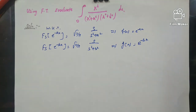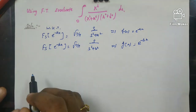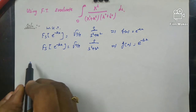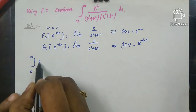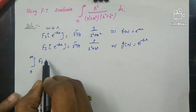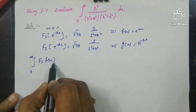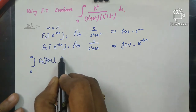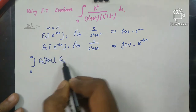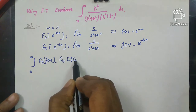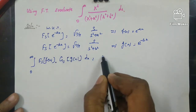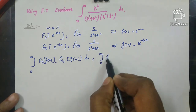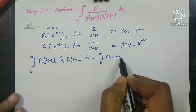Now let's apply Parseval's identity for the sine transformation. The Parseval's identity states that the integral from 0 to infinity of Fs[f(x)] times Fs[g(x)] ds is equal to the integral from 0 to infinity of f(x) times g(x) dx.